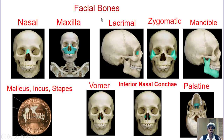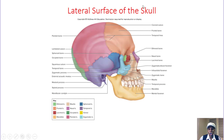Let's practice the 14 facial bones: nasal, maxilla, lacrimal, zygomatic, mandible. The three auditory ossicles: malleus, incus, stapes. Then the VIP: vomer, inferior nasal concha, and palatine. Now looking at the skull overall, you should be able to recognize the cranial bones — frontal, parietal, occipital, temporal, sphenoid, ethmoid — and all the facial bones including the hyoid.